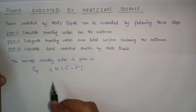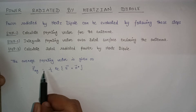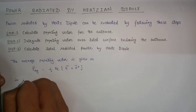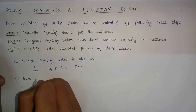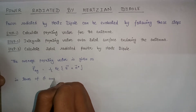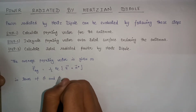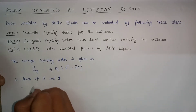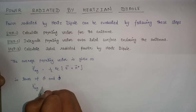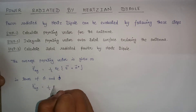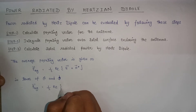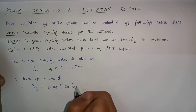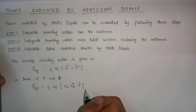If we denote the value of the average Poynting vector in terms of theta and phi, then the average Poynting vector P_average is given as one-half into the real part of E cross H-star dotted with R-hat, where R-hat is a unit vector.